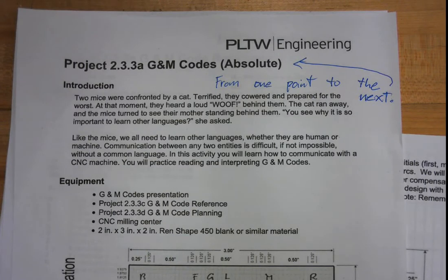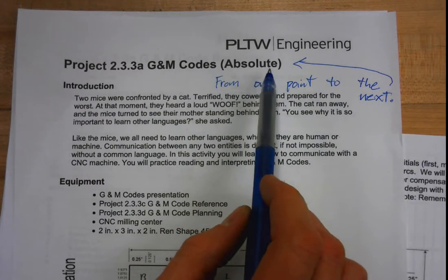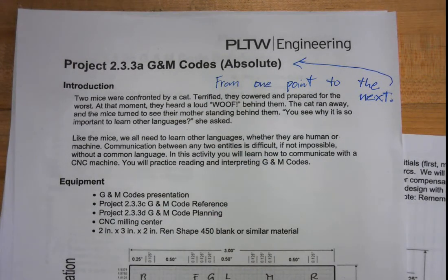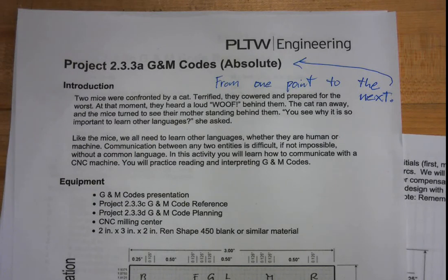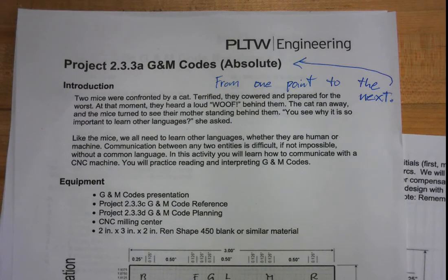I'm going to introduce to you in this video absolute coordinates. Absolute is just moving from one point to the next — you tell the machine which point you want it to go to. When we get into relative, it is the distance that the machine is moving. For this first video, we're just going to be introducing absolute, and it is just moving from one point to the next.